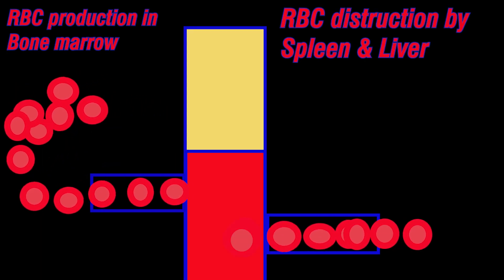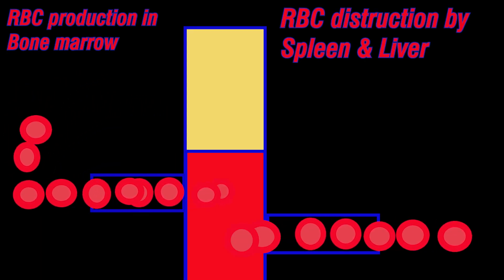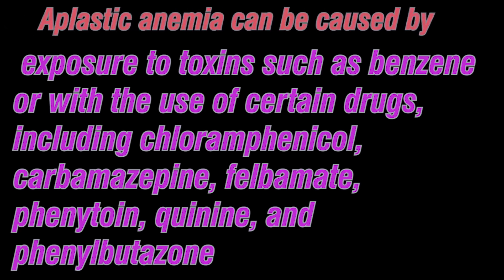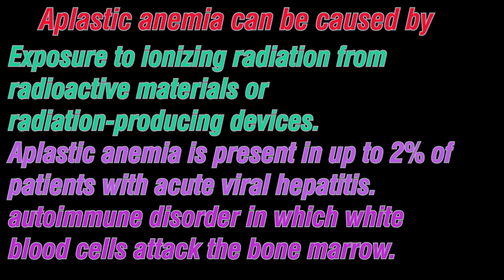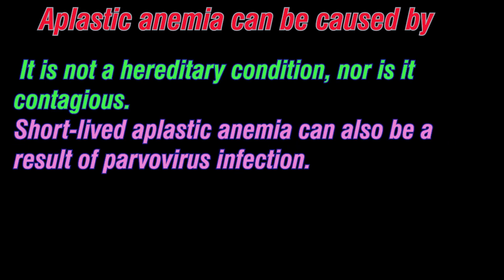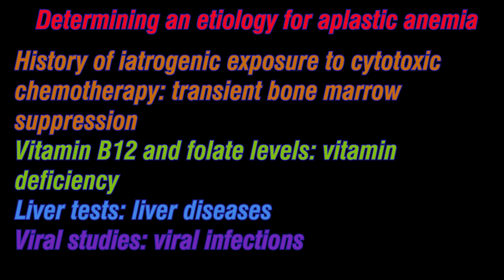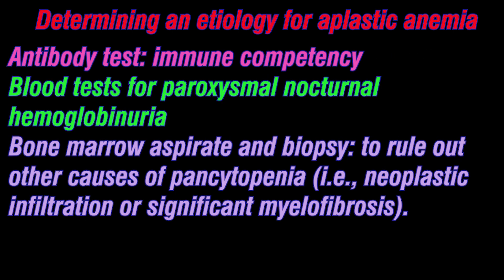Impaired production: aplastic anemia is characterized by total bone marrow failure with a reduction in circulating levels of RBCs, WBCs, and platelets. The sudden appearance of aplastic anemia or pure red blood cell aplasia is often caused by an immune process — either antibodies directed against the stem cell or a cellular immune mechanism that suppresses stem cell proliferation.